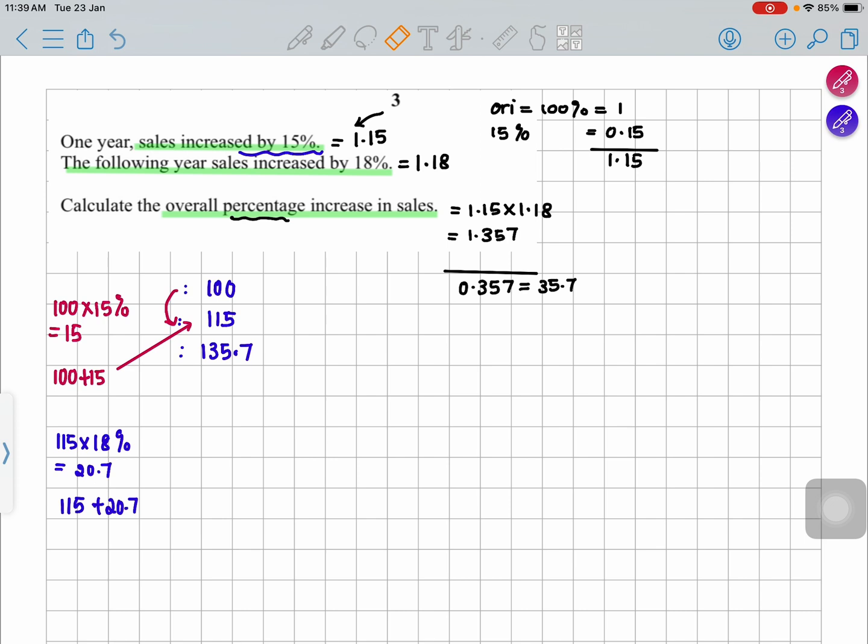So this is what's happening. Now when you want to calculate the overall percentage, then you use the same method again. Your current value is 135.7 and your old value or the original value was 100 divided by 100, and you will realize that my answer is exactly the same.